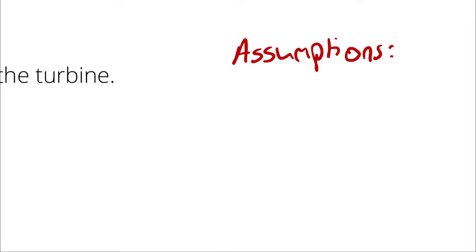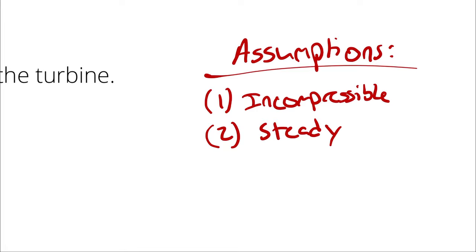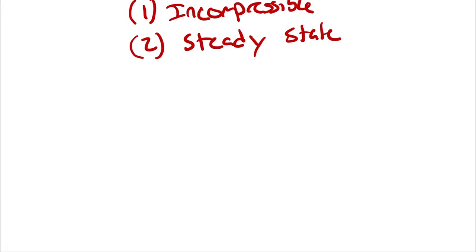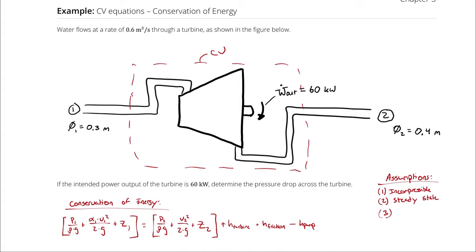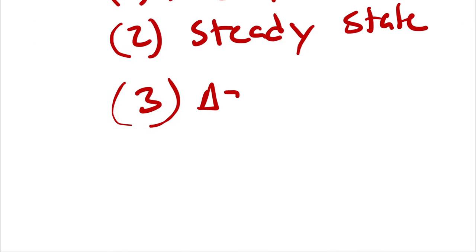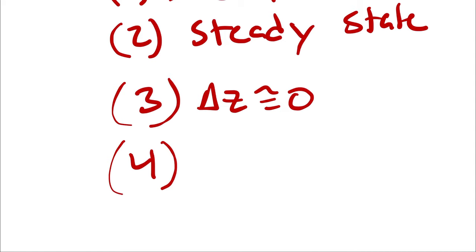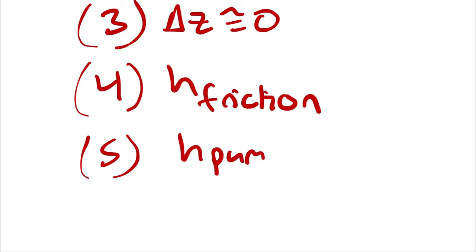Beginning as per usual with incompressible flow and steady state. Incorporating elevation change — I'm going to say state one and state two are pretty close to the same elevation, so change in Z is pretty close to zero. I have no friction losses to speak of because I wasn't told about any, and no opportunity for a pump to do anything of consequence.